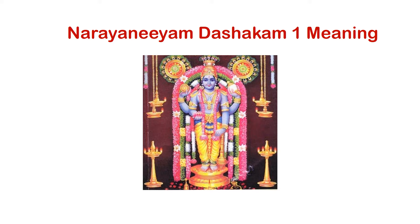Dashakam 1 is based on Srimad Bhagavatam. Just as Shuka described in Kanda 1 of Srimad Bhagavatam, Bhattatri also describes Bhagavat Svarupam — the form of the lord and its significance — as per the Bhagavatam. The same meaning has been told in Dashakam 100 as well, but in Dashakam 100 Bhattatri has actually witnessed the lord in front of him. Some people say Dashakam 1 and 100 are the same — but there is a difference.